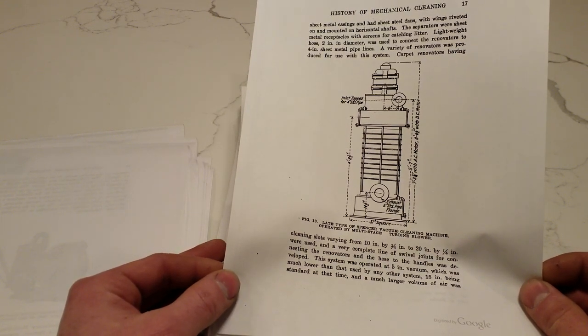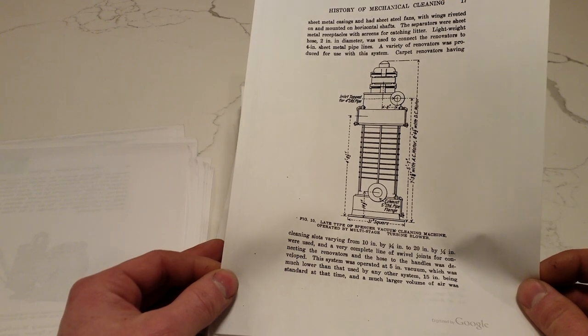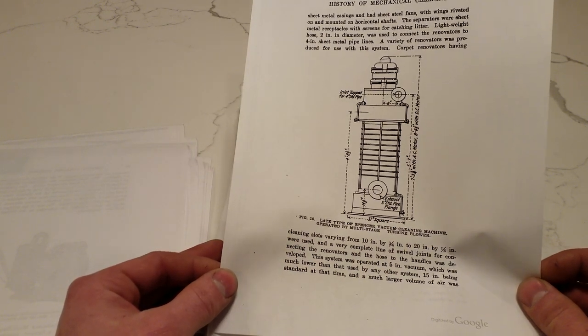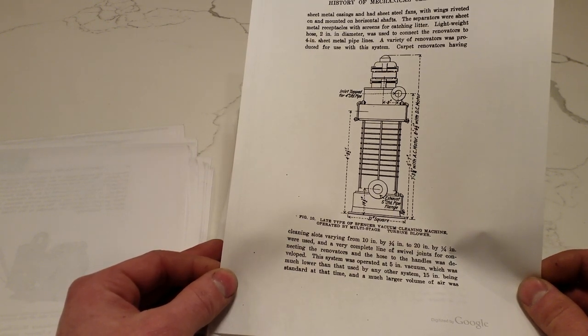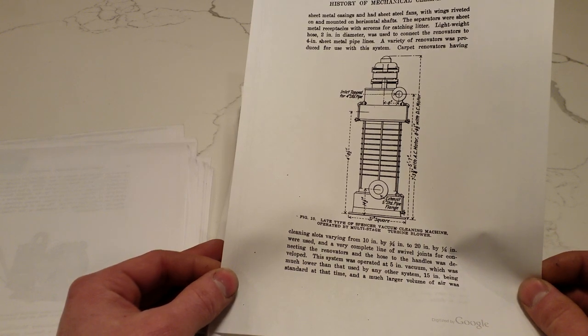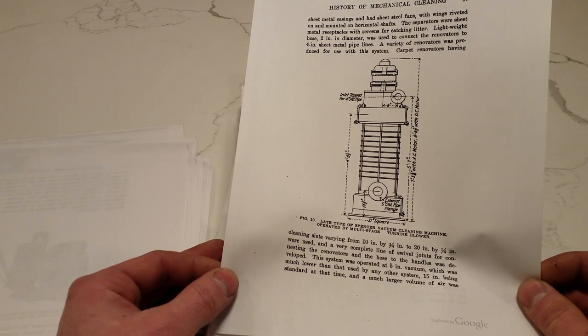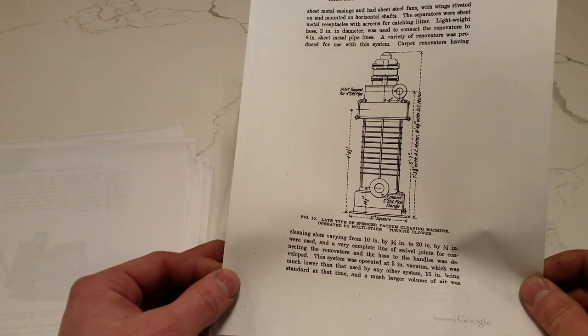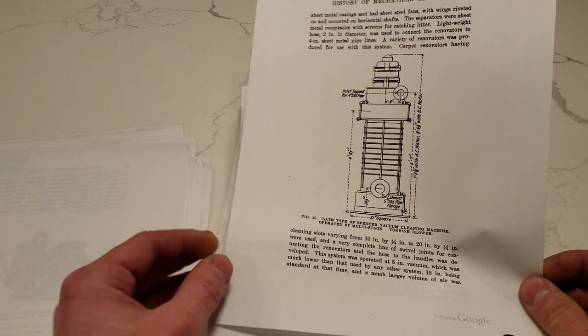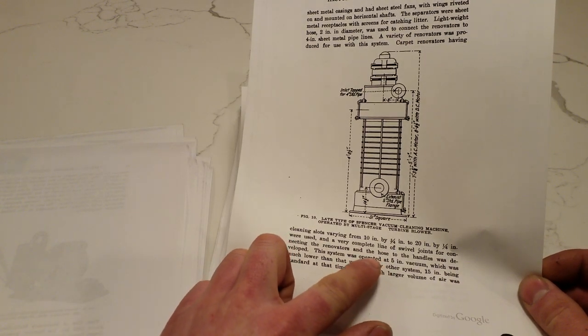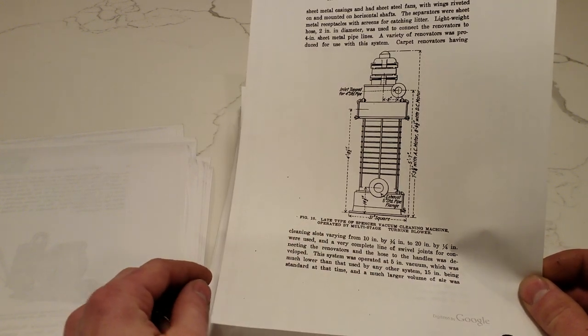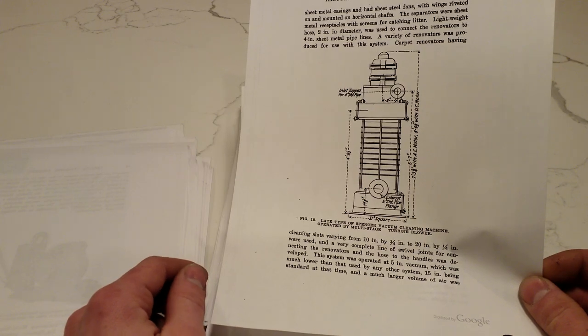Keep in mind, any vacuum measurement in this book is going to be in inches of mercury, which is 13.59 times heavier than water. So a reading of 135 inches of water lift is only 10 inches of mercury. So this measure that the Spencer machine operated at was about 70 inches of water lift.